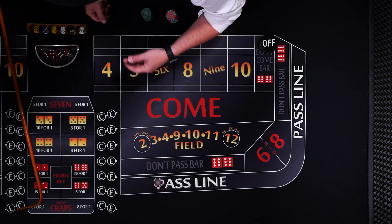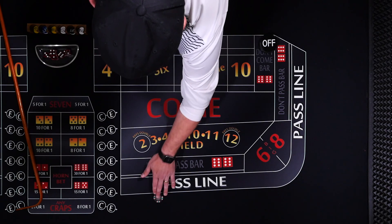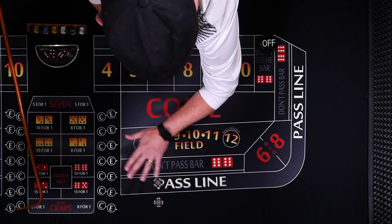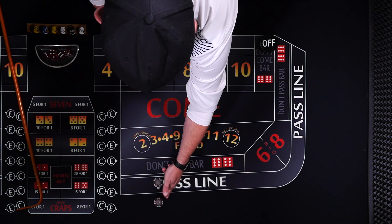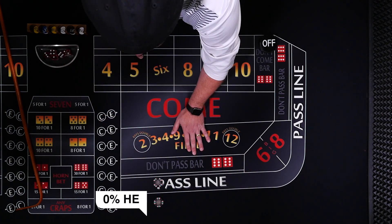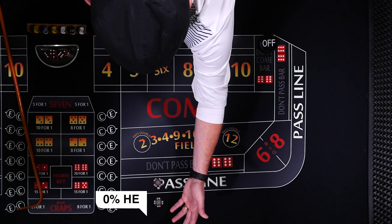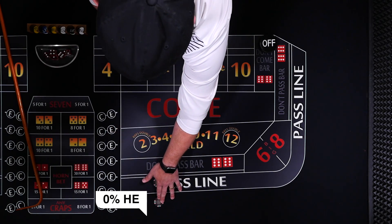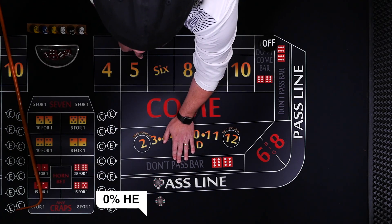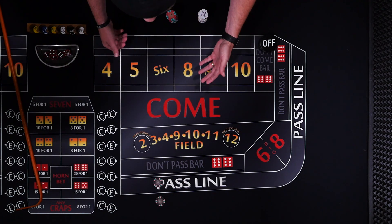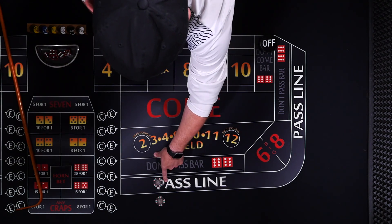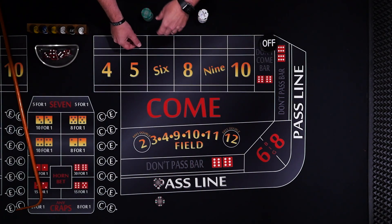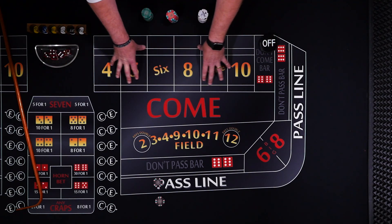The nice thing about the pass and come is you can take odds. The odds bet is actually paid fair — this is the only bet in the whole casino that pays completely fair according to your risk: 0% house edge. What that means is after a million bets, the casino breaks even and the player breaks even. It's basically a coin flip. So if you're a math person, it's a no-brainer: pass line at 1.4%, odds bet at 0% house edge. The come is the same, and then place bets go from 1.5% and up.